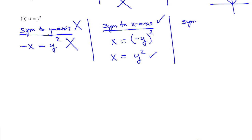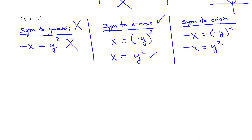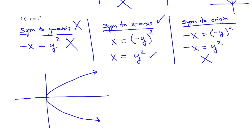Finally, check symmetry to the origin by plugging in negatives for both x and y. That gives negative x equals y squared, which is not the same, so it is not symmetric over the origin. The graph of x equals y squared is a parabola turned on its side. The point 4 comma 2 and the point 4 comma negative 2 illustrate the symmetry over the x-axis.